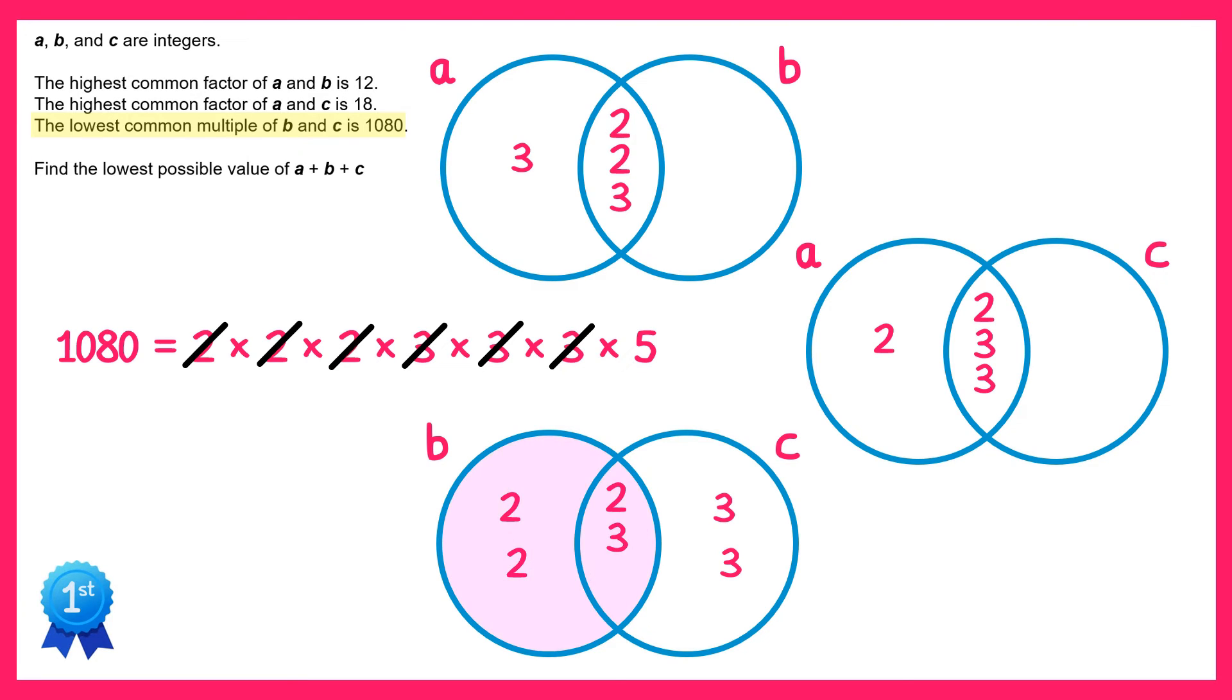We just need to tidy up our first two Venn diagrams a bit. If you look at this circle here, you can see B is made up of 2 times 2 times 2 times 3, but this circle in the first diagram is missing one of the 2's, so we'll place that 2 in the right section here. In a similar way, the C circle here is made up of 2 times 3 times 3 times 3, whereas this circle is missing one of the 3's, so we'll put that in the right side here.